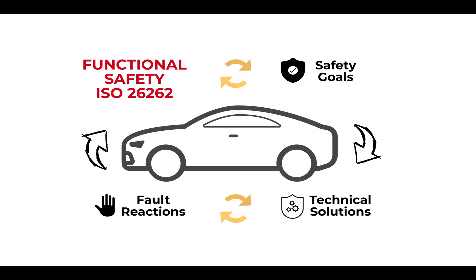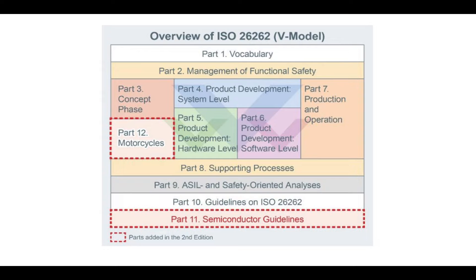Functional safety as defined by ISO 26262 aims to reduce the risks of software to a very low level that society finds acceptable. In this video, I will give a condensed overview of functional safety and the standard. The up-to-date second edition of ISO 26262, Road Vehicles — Functional Safety, consists of 12 parts.